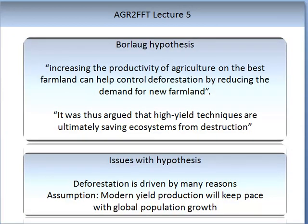Dr. Borlaug had a hypothesis: that increasing the productivity of agriculture on the best farmland can help control deforestation by reducing the demand for new farmland. Deforestation was as much of an issue then as it still is today. The theory is simple — higher yields, less farmland required, more land for forests. It was thus argued that high-yield technologies are ultimately saving ecosystems from destruction. One issue with this hypothesis is that deforestation occurs for many reasons other than just agriculture, and it also requires that modern yield production can keep up with global population growth.